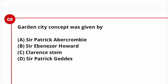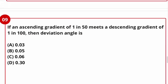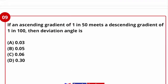Next question: The Garden City concept was given by whom? The Garden City concept involves proportionate allocation of different areas — residential, industrial, and agricultural zones in proportion. This concept was proposed by Ebenezer Howard in 1898.